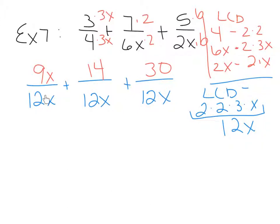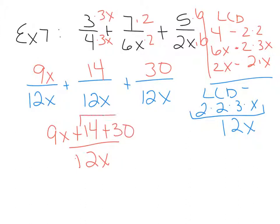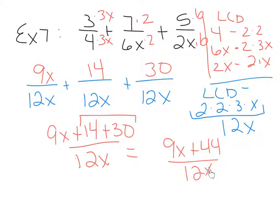I'm glad that you recognize they will reduce, but you don't want to reduce at this point. When you're adding and subtracting, you want to reduce at the end. So our denominator is going to be 12x. Our numerator — we're going to add and combine like terms: 9x plus 14 plus 30. The 14 and the 30 are like terms, so we end up with 9x plus 44 over 12x. The x's cannot reduce because they're part of terms, and the 9 and 12 cannot reduce either because this is part of a term. The only way to reduce would be to factor out a GCF, but 9 and 44 have no factors in common, so we're done.